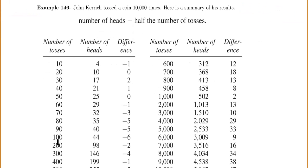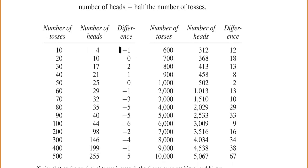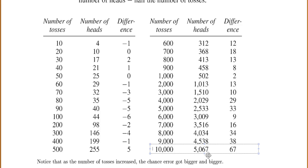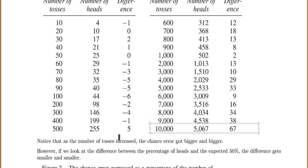John Kerrich was a mathematician in a World War II prison camp who really did toss a coin 10,000 times. When he tossed it 10 times, the difference from expected was negative 1. By 100 tosses, he'd gotten 44 heads with a difference of negative 6. At 500, he got 255 heads for a difference of 5. By 10,000, he was at 5,067 heads with a difference of 67. As the number of tosses increased, the chance error got bigger and bigger — but the difference between the percentage of heads and the expected 50% got smaller and smaller.